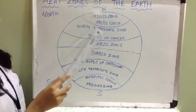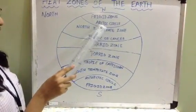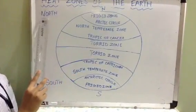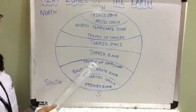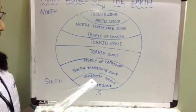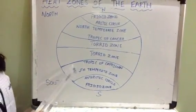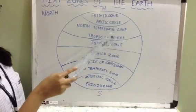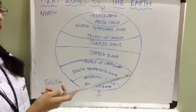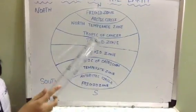Temperate zone: it lies between the tropic of cancer and the arctic circle in the northern hemisphere, and the tropic of capricorn and the antarctic circle in the southern hemisphere. The sun's rays here are slanting, so the temperature here is neither too hot nor too cold.